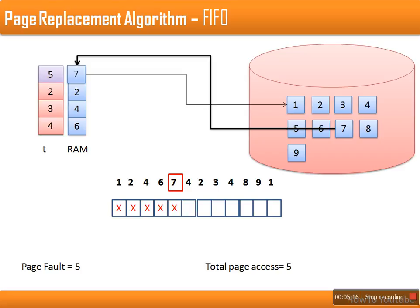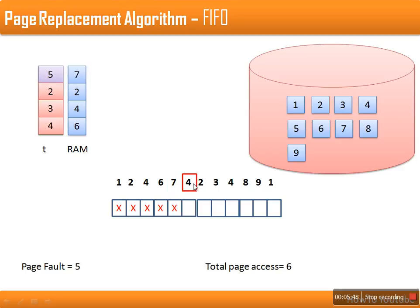Now page number 7 is available in RAM, and the timestamp attached to it is five, meaning it was loaded at the fifth step. So far, every page we have required was not available in RAM, and every page reference resulted in a page fault. Looking at the current status: total page references are five and total page faults are five.